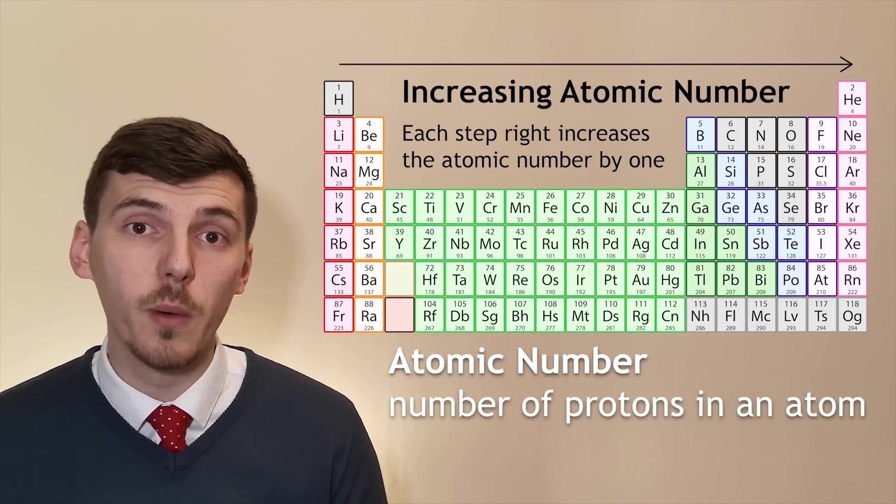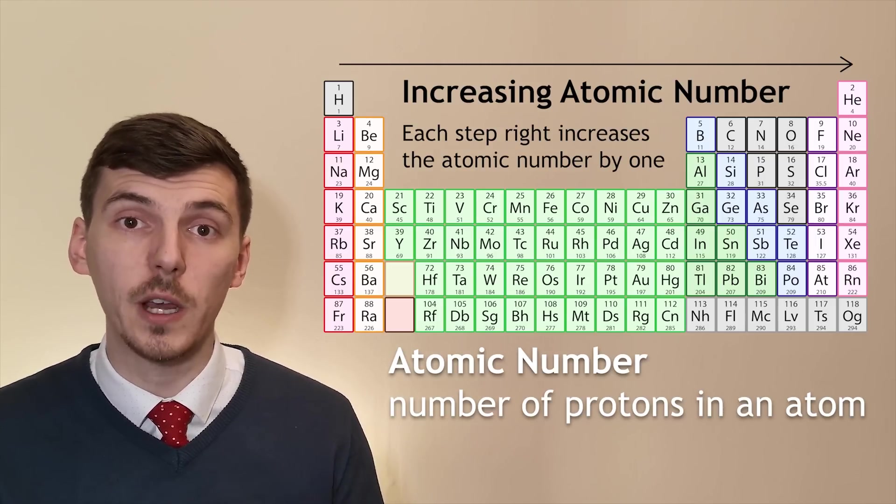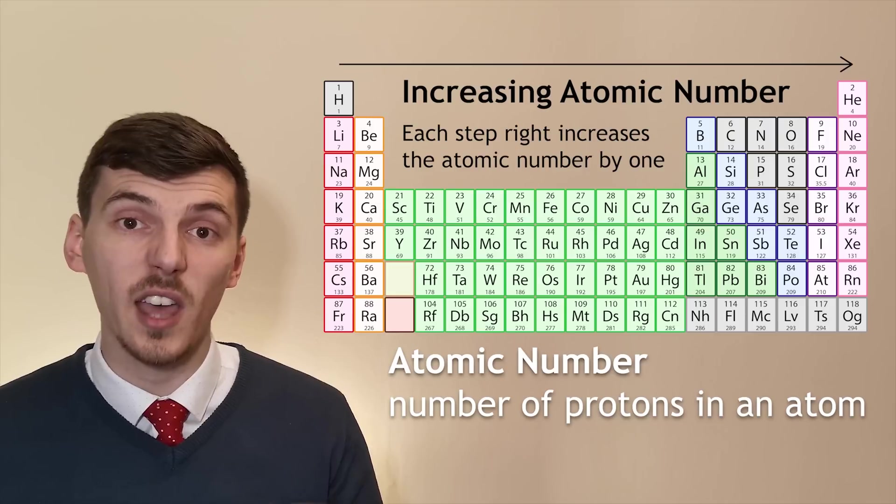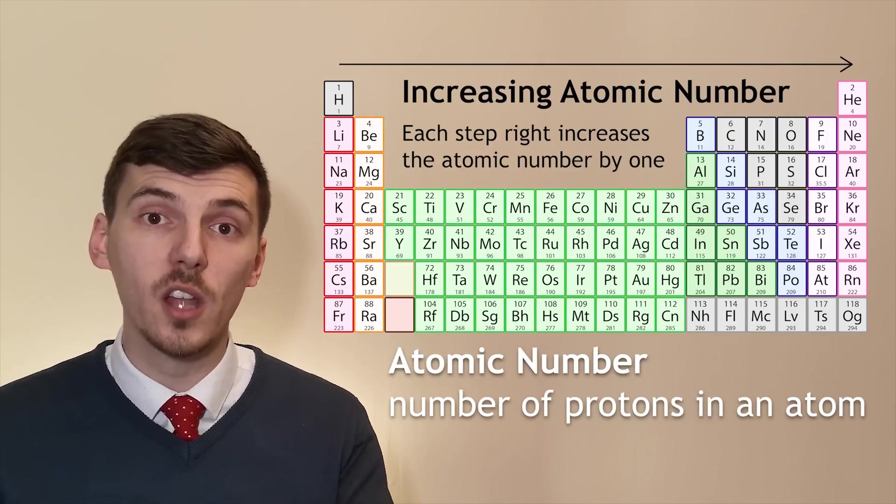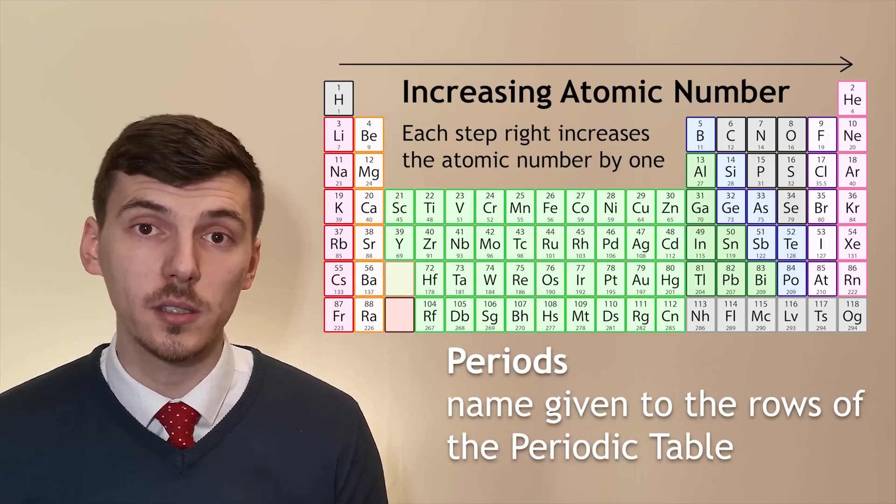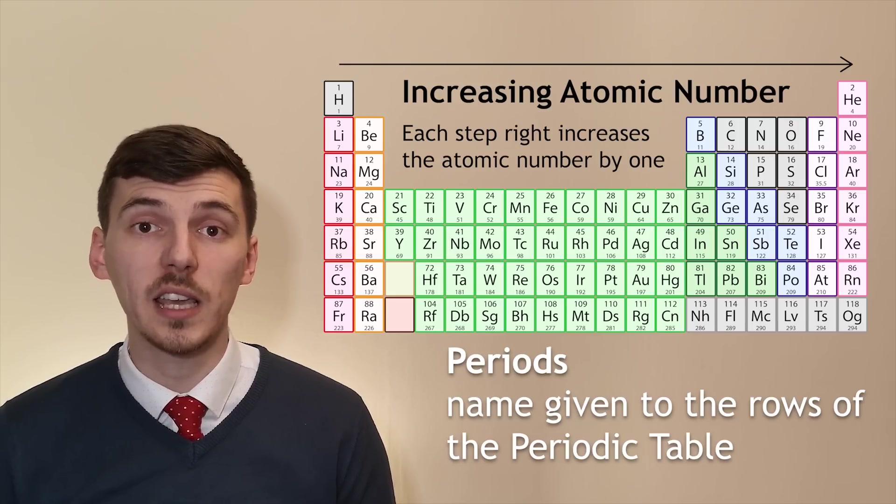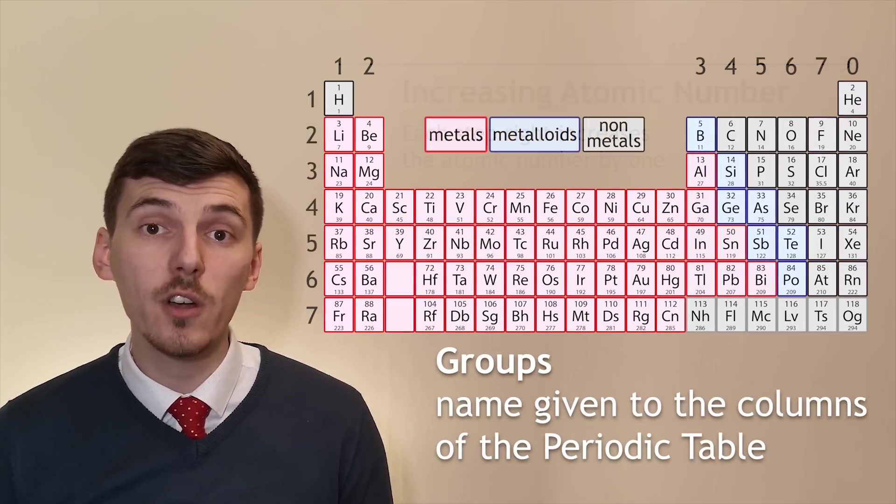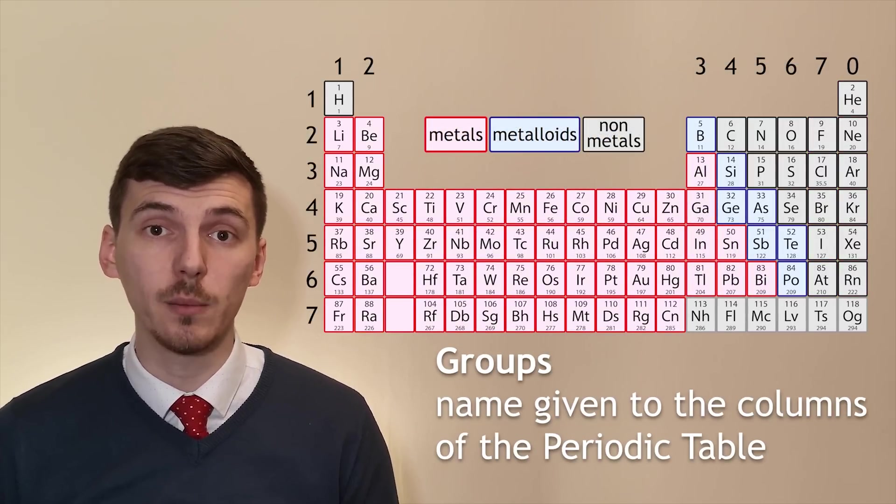The proton number increases by one as we move across the periodic table. Once we get to the end of that row we have to start a new row and each of those rows are called periods. We can also spread the periodic table into groups.